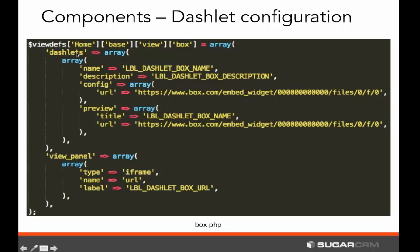There are two major properties to the dashlet here. One is the dashlets array, which is a set of configuration variables defining all the various pieces that pertain to how the dashlet is exposed in the system — the name, description, configuration parameters including a URL field, and preview parameters so users can preview the dashlet before using it. The next part is the view panel, which defines the fields shown in the main portion of the dashlet. For this example, we're going to have just one single field — an iframe field — named URL with a label.